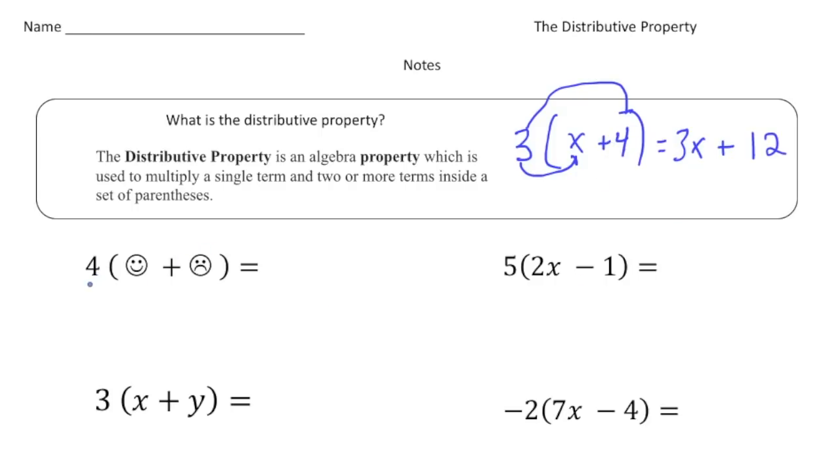Here we have four groups of happy face plus sad face. So we're going to distribute the 4 to the happy face. And that gives us four happies. And then plus, we're going to distribute the 4 to the sad face. That's going to be four sad faces. And that's it.